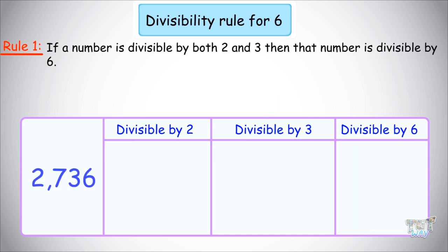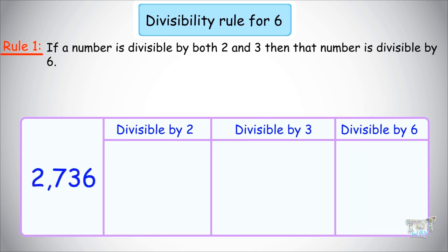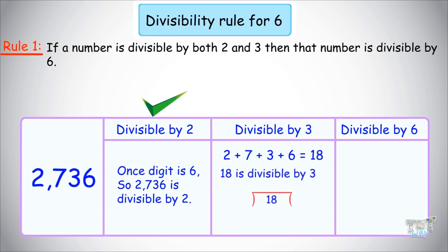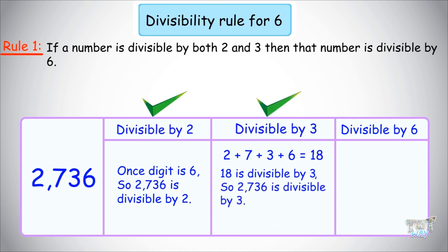Here we have another number: 2,736. Let's check if it is divisible by 2: the ones place digit is 6, so yes, it is divisible by 2. Now let's check divisibility by 3: the sum of digits is 2 + 7 + 3 + 6 = 18. 18 is divisible by 3 (18 ÷ 3 = 6). So this number is divisible by both 2 and 3, therefore it is divisible by 6.